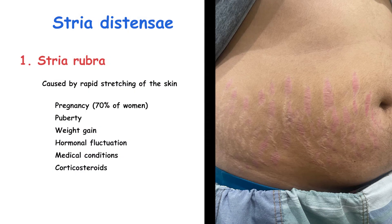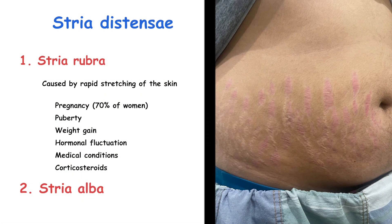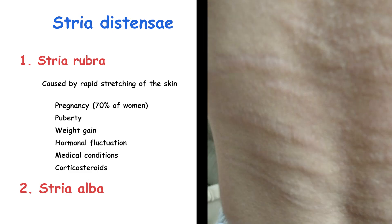Over time, stria rubra may fade and evolve into stria alba, which is hypopigmented and scar-like, appearing white or silvery in color, and is more difficult to treat. The transition involves the flattening and lightening of the marks as inflammation subsides and the skin heals. This progression often happens over 6 to 10 months. Stria alba persists indefinitely and may become more prominent with age as skin thins and loses elasticity.